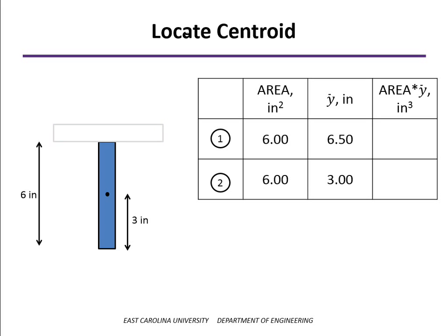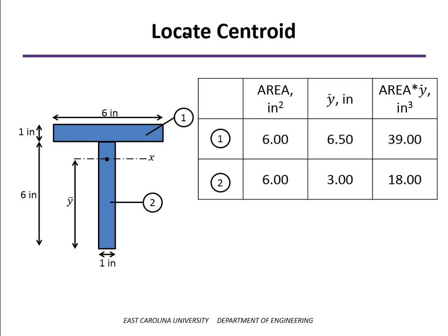For the web, the distance from the bottom of the section to its centroid is half of the web height, or 3 inches. For each row, we multiply the area times y bar, and then we sum those values, as well as summing the total area.